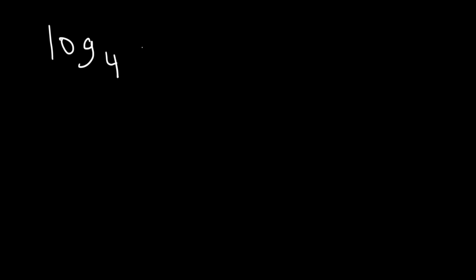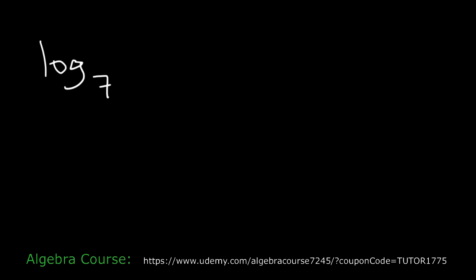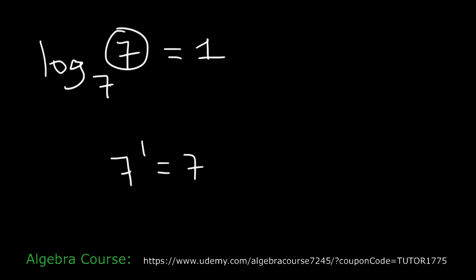Now what about log base 4 of 1? Log of 1 is always equal to 0. What about log base 7 of 7? 7 to the 1st power is 7. So if these numbers are the same, they will cancel — it's simply 1.